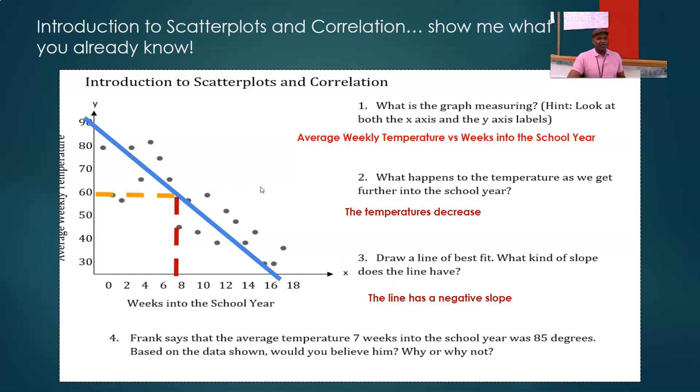Matter of fact, if we use the line of best fit, 60 would be a better estimate. And actually, I don't see an actual data point at seven weeks. Again, that's the reason for the estimate. So I would not believe Frank because, according to the data, the temperature was about 60 degrees in week seven.